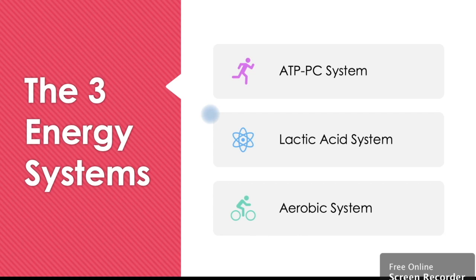So the three energy systems, they all help produce this ATP, the body's energy. We have number one, the ATP-PC system. The second is our lactic acid system. And the third is our aerobic system.